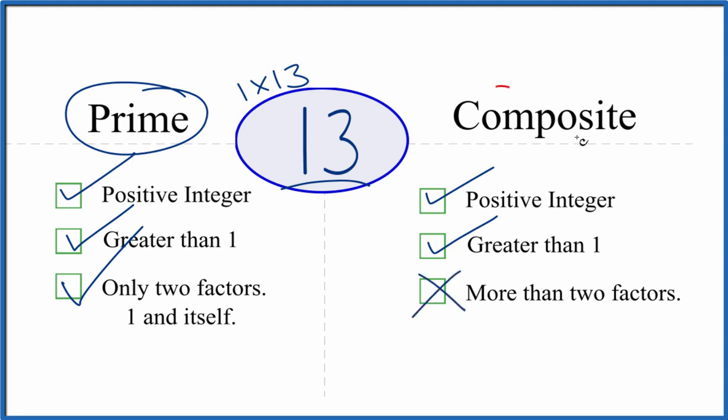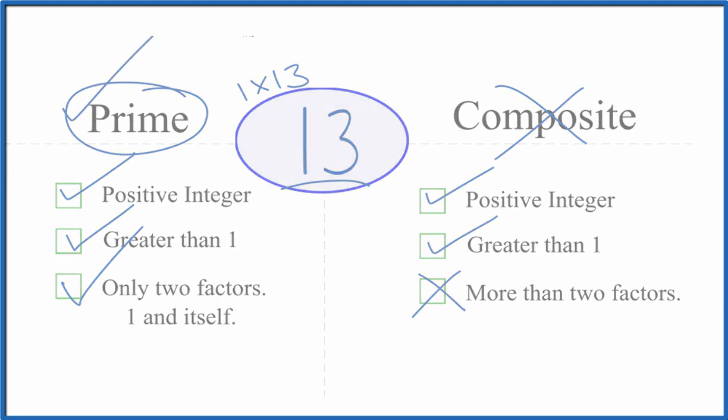This is Dr. B, answering the question whether 13 is a prime number or a composite number. It's a prime number. Thanks for watching.